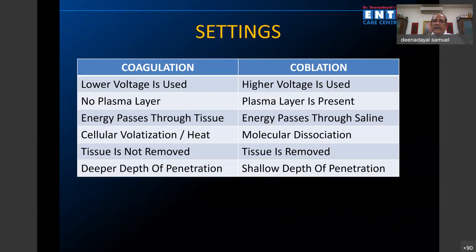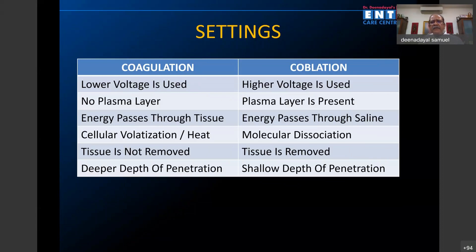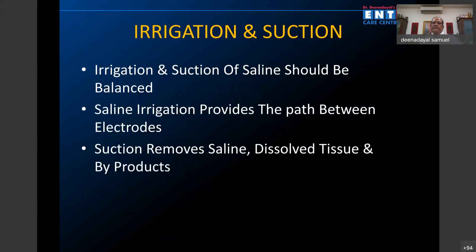In terms of coagulation versus co-ablation: in co-ablation, high voltage is used; in coagulation, it is low. In coagulation, there is no plasma layer, whereas in co-ablation there is. Coagulation does not always require saline, but co-ablation requires saline as an absolute necessity. In coagulation, no tissue is removed, whereas in co-ablation tissue is removed. The coagulation pedal has a deeper depth of penetration, and co-ablation has a shallow depth. Use coagulation when controlling a bleeder, though small bleeders can be controlled beautifully even by co-ablation. Use as minimum coagulation as possible.